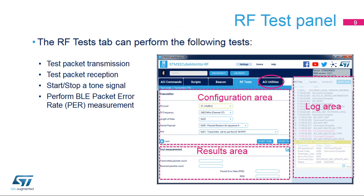The RF test pane is organized in two areas: the configuration part on the top and the results part at the bottom. It is possible to perform various tests: packet transmission, packet reception, tone transmission, and packet error rate, or PER, computation.